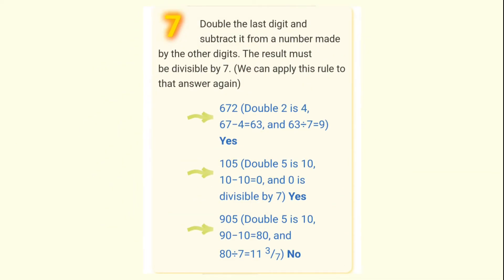Example 672. Last digit is 2. When we double it, we get 4.